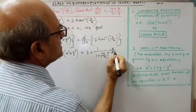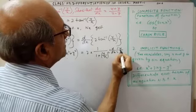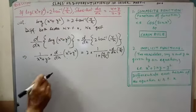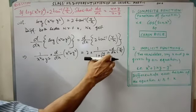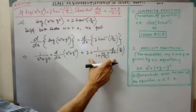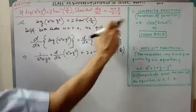By chain rule, d by dx, y by x. In both sides, we have applied the chain rule. That is, composite function.